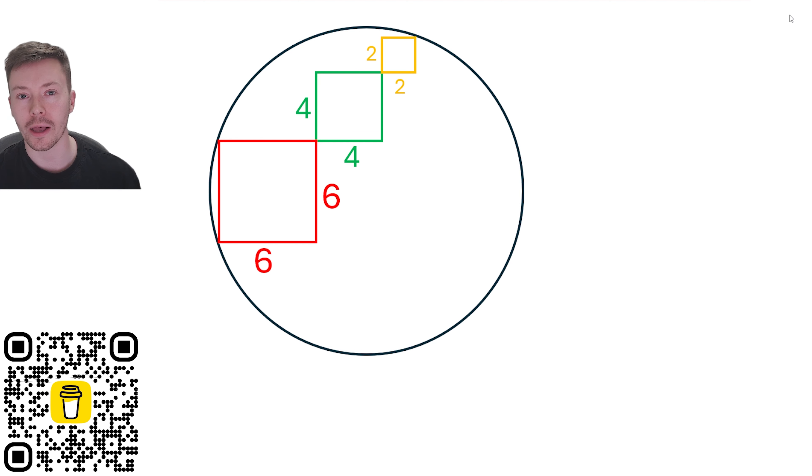So we've got three squares that meet at the top right-hand corner, or bottom left corner of each square depending on which way you're looking at it, and they basically touch the circumference of the circle, as you can see in the diagram.